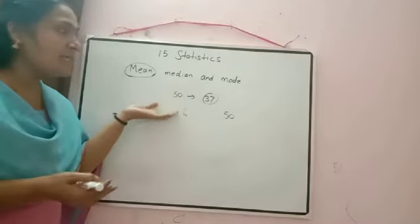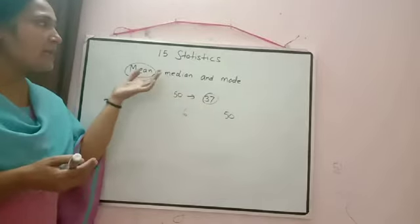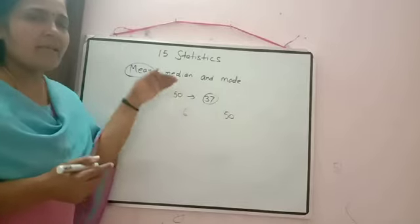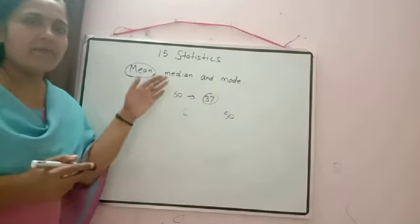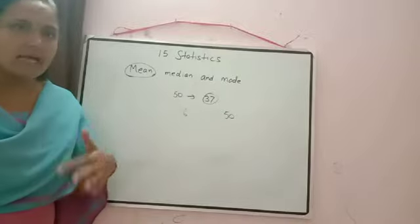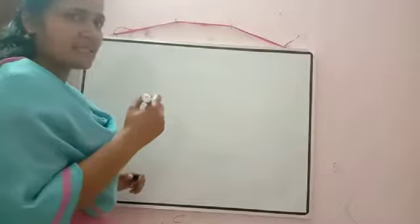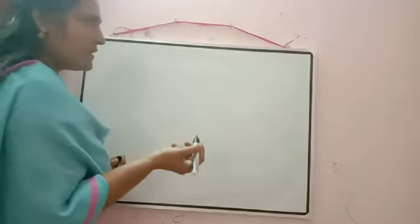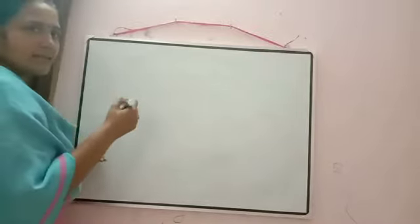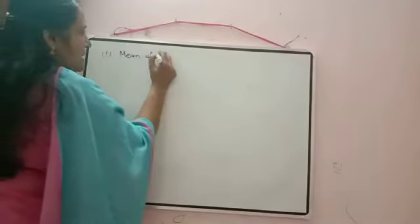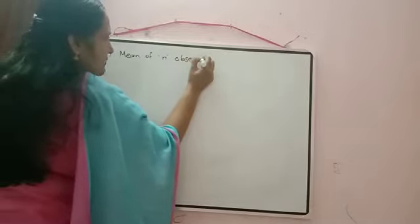But in actual cases, if the average mark is 37, some students might have got 6 marks and some students might have got 50 marks. So there is a difference — the value deviates from the average. How much deviation is there from all these values is what we are calculating in this chapter — how much each value deviates from the mean. Before calculating that, first we write down the formulas so it will be easy for us. First: mean of n observations.